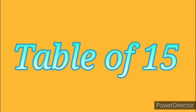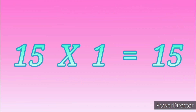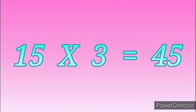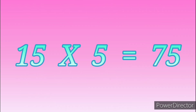Table of 15. 15 ones are 15. 15 twos are 30. 15 threes are 45. 15 fours are 60. 15 fives are 75.